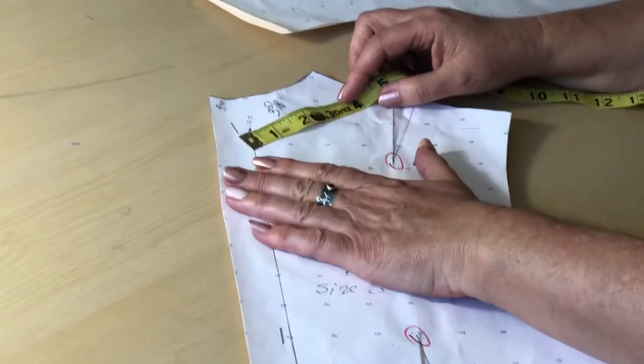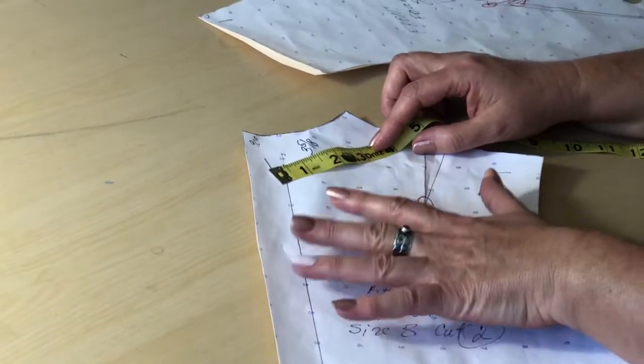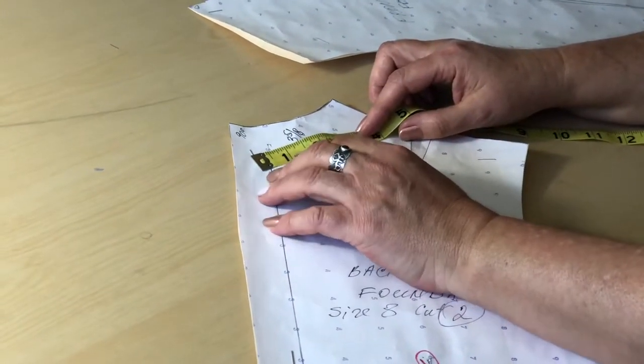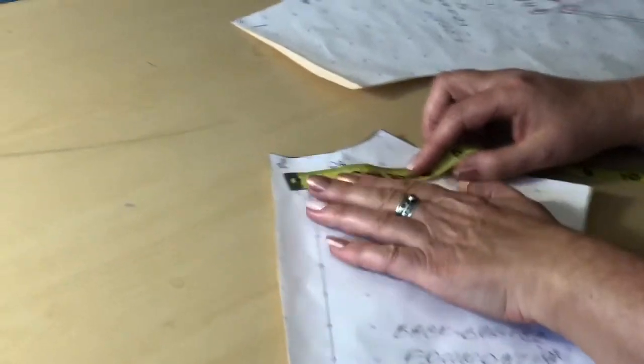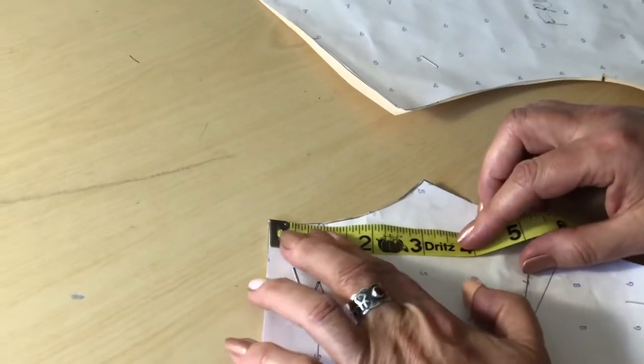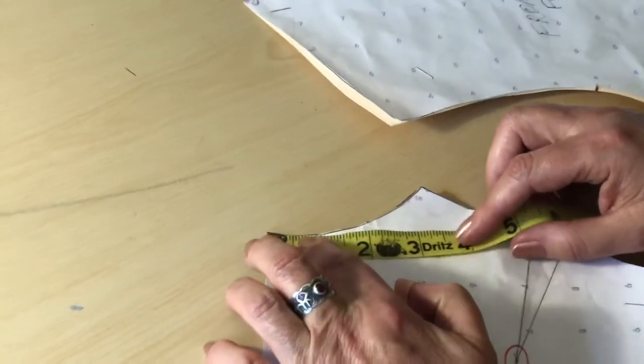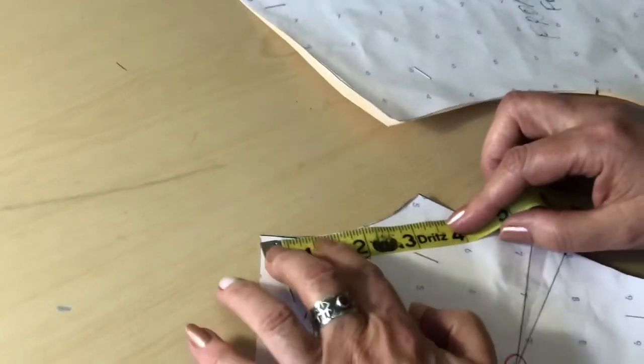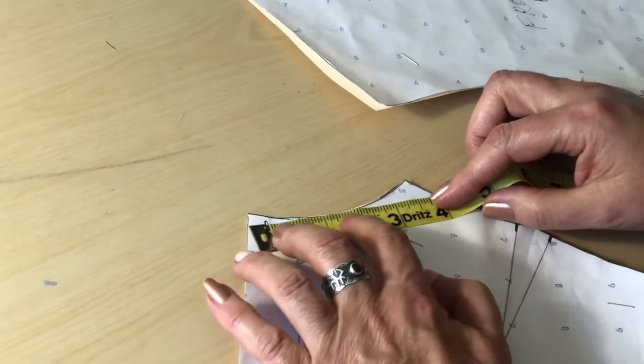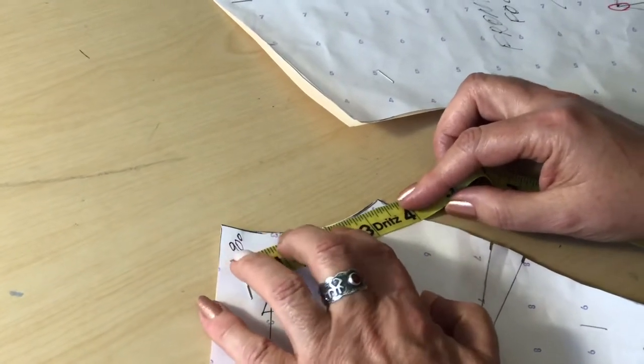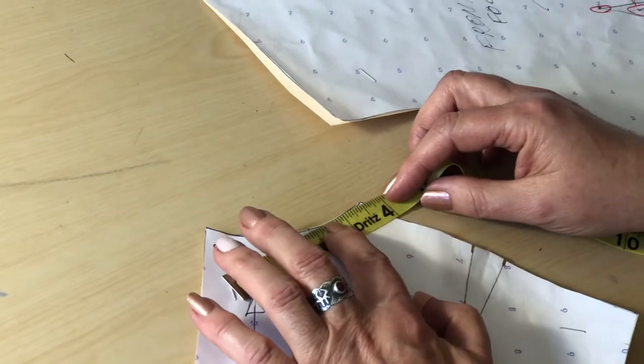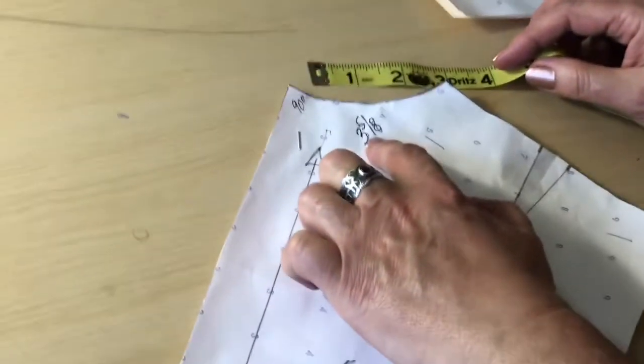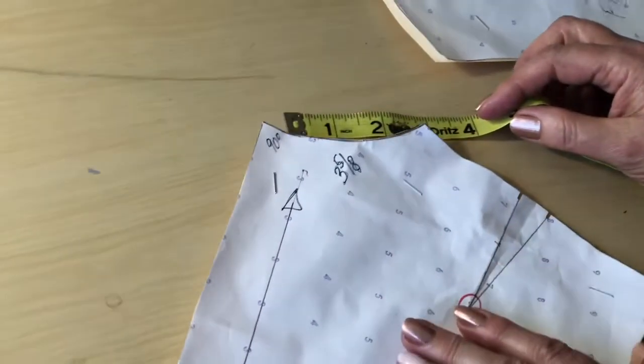I'm going to measure the neckline of my bodice foundation. You can measure any neckline that you're working with. So I take my back foundation and I place my tape right at the neckline and by holding with my nail or you can hold it with a pencil and in small increments, I go through the neckline and wherever it stops, I will put that measurement right next to it.